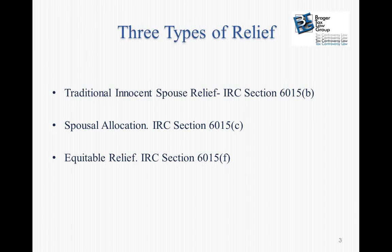When we talk about innocent spouse relief, there are actually three different kinds. What I refer to as traditional innocent spouse relief under IRC Section 6015(b) — I call it traditional because this was the only type available before the amendment of the law in 1998 — and it is a fairly difficult road to go down. Generally speaking, one of the other two forms is going to be more likely to be granted.